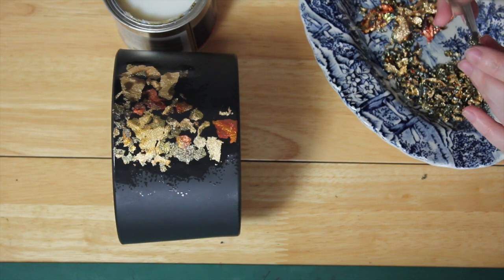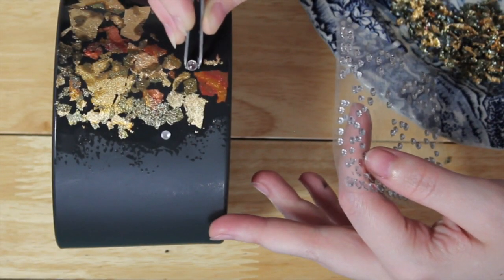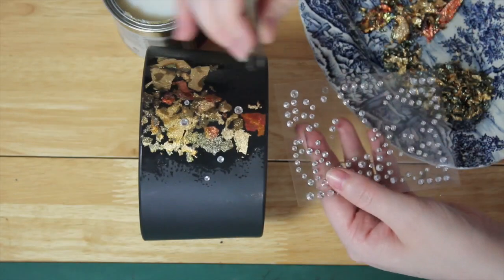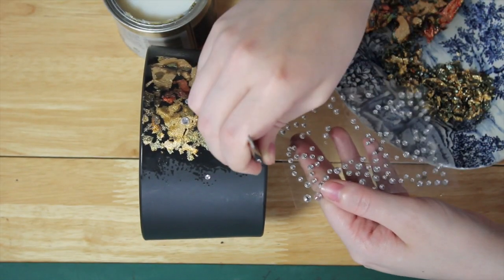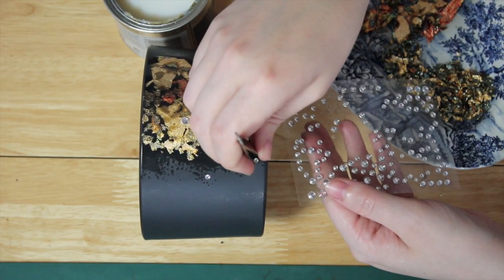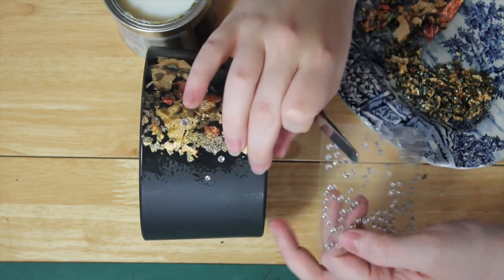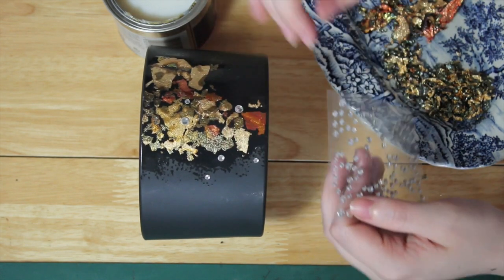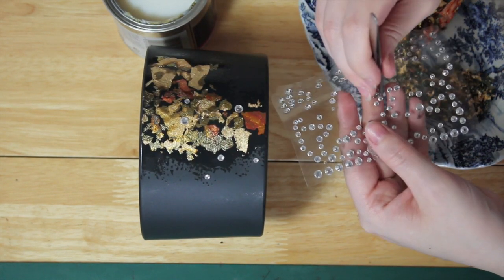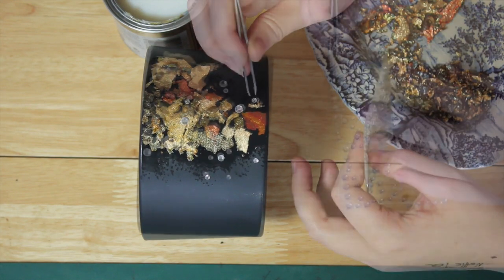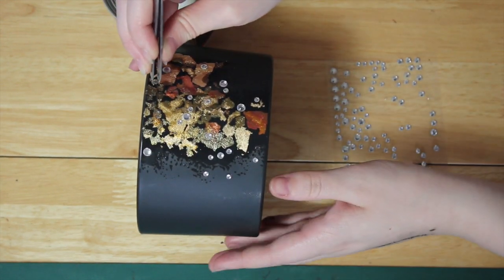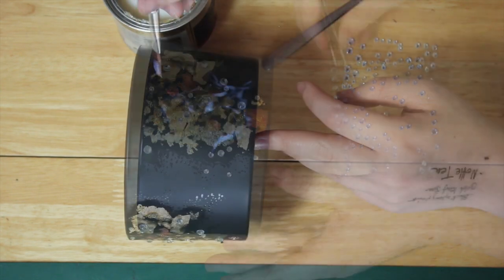Before I apply the rhinestones, I'm going to put a couple of layers of varnish over the gilding flakes just so they don't get scratched or damaged and there's a protective layer. After that, I'm going to apply a few rhinestones because, you know, I'm the rhinestone addict.